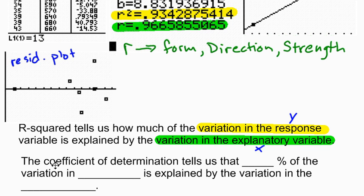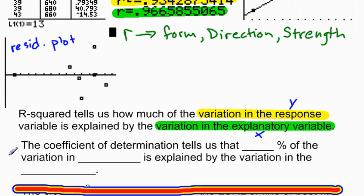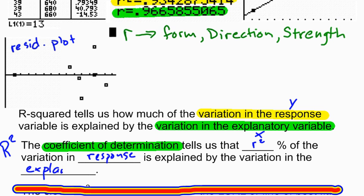So this right here is just kind of a way to write or explain the R squared. If you're asked to describe R squared or explain what R squared means, you can fill in the blanks on this little sentence right here. We'd say the coefficient, and by the way, R squared is sometimes called the coefficient of determination. So the coefficient of determination tells us the blank percent of the variation in blank is explained by the variation in blank. And what goes into these blanks, this is where your R squared would go, and this is where your response variable would go, and over here is where your explanatory variable would go.